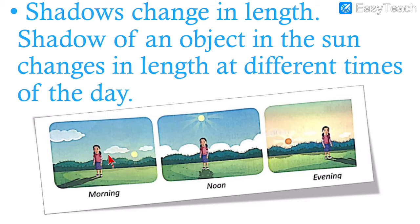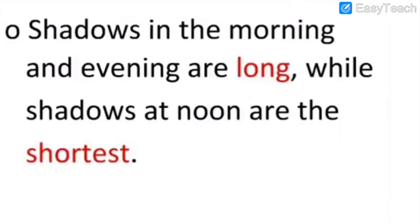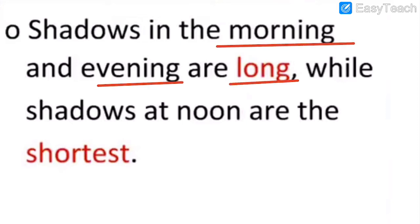The object here is the girl, and we see her shadow in the picture. In the morning it is very long, at noon it is very small, and in the evening it is long again. Shadows in the morning and evening are long, while shadows at noon are the shortest.